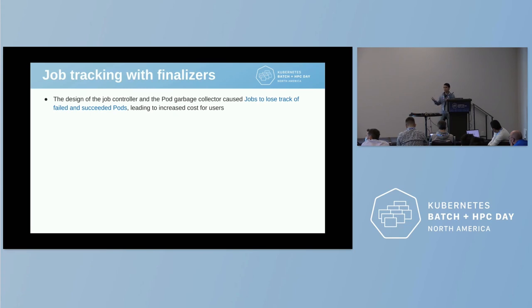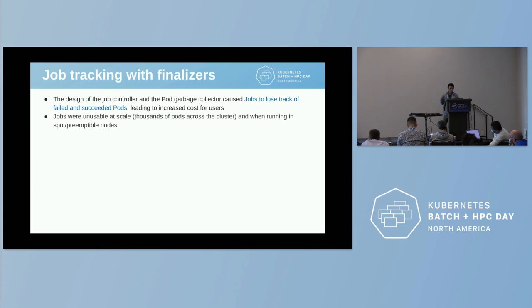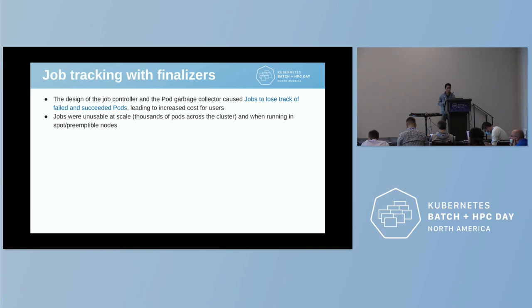At some points, when it interacted with the garbage collector, it would start losing track. You could see that your job said five pods completed, and then later it says only three completed. Why? Because the pods were disappearing and the job controller was only looking at the pods that existed in the cluster. This led to pod recreation and people ended up paying more to run their jobs. And of course, this meant that jobs were unusable at scale — people running a 5,000 parallel job wouldn't be able to use the job API.